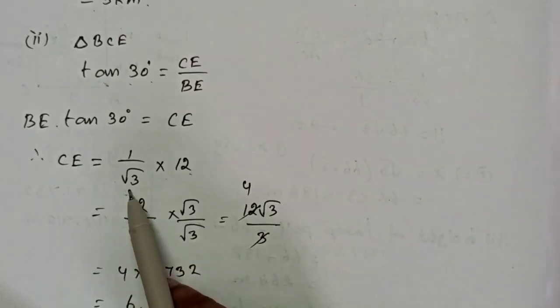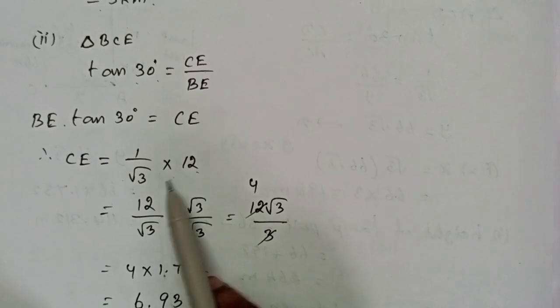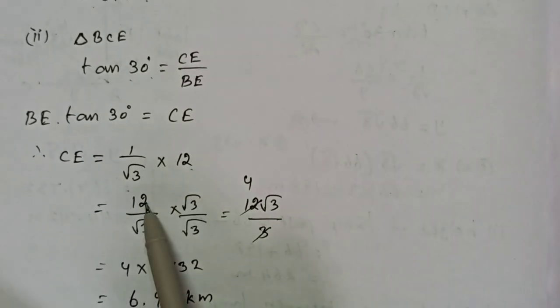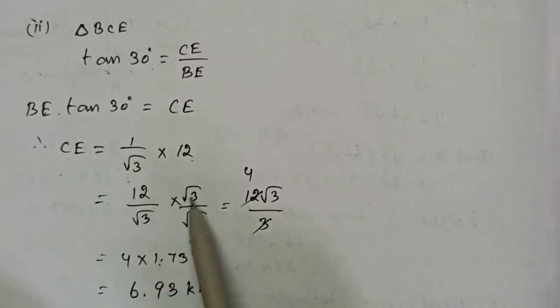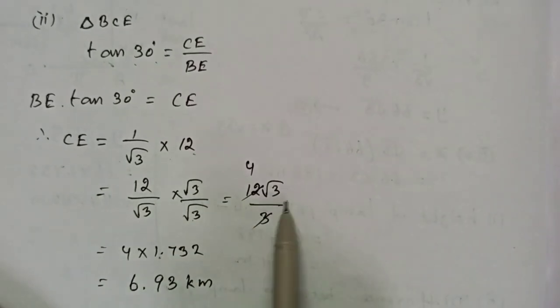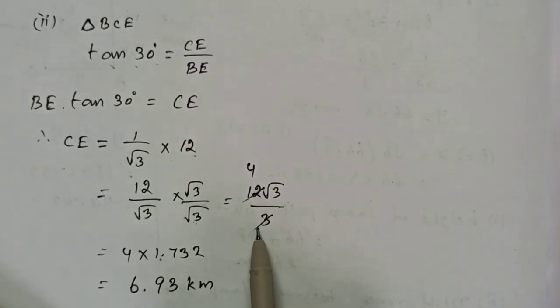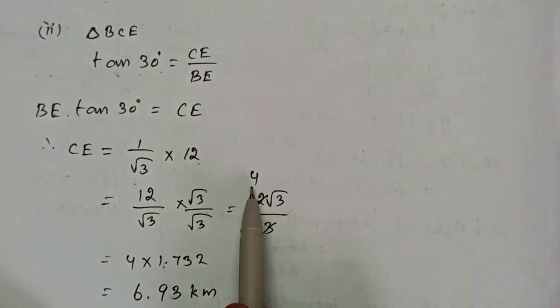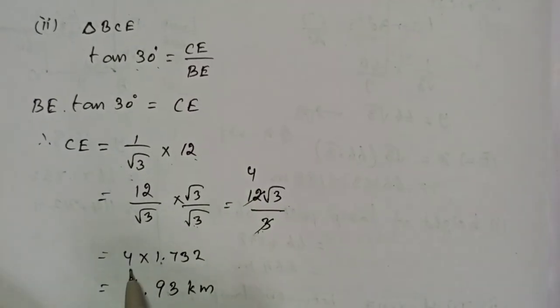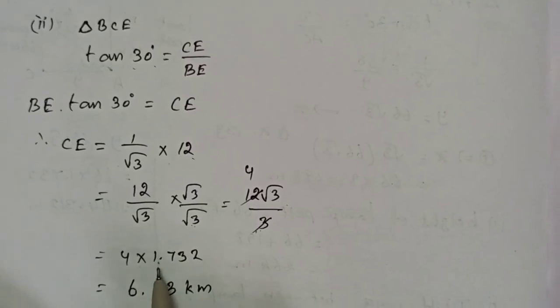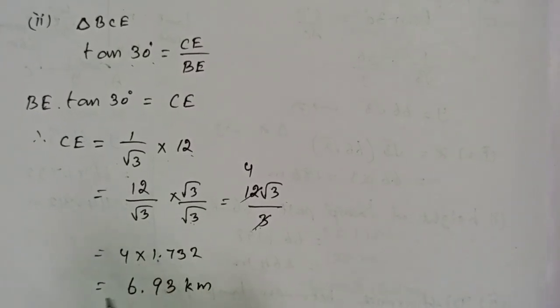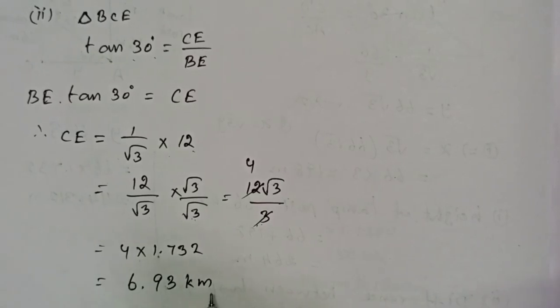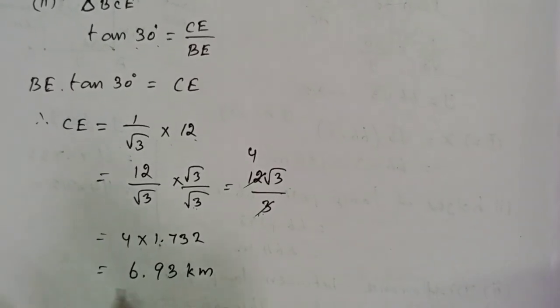If we have the root value in the denominator, we can multiply and divide by root 3. So 12 by root 3 times root 3 by root 3 equals 12 root 3 by 3. If we cancel, 4 times root 3. 4 times 1.732 equals 6.93 km. This is CE, the height.